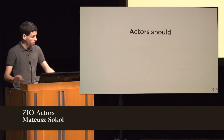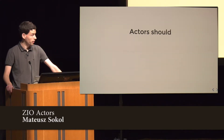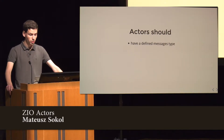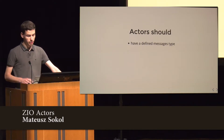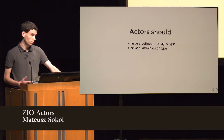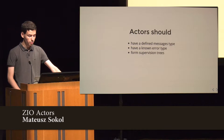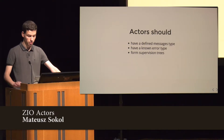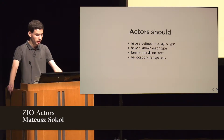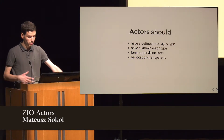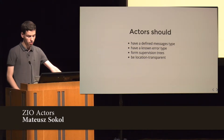Now let's focus on what we want from the API design. Actors should have a defined message type, so we should be aware of what kind of messages we can send to an actor. We want actors to have a known error type — whether the actor can fail with some custom error. We want actors to form a supervision tree, so in case of failure we can recover from the error with some policy. And we want actors to be location transparent, so we want actor remoting and to communicate with them as if they are local ones.